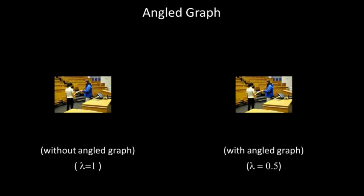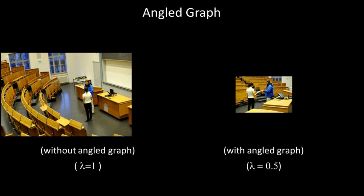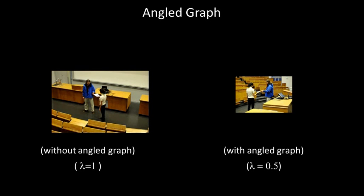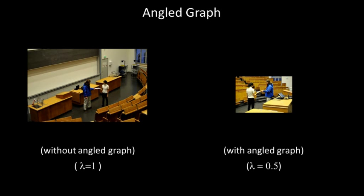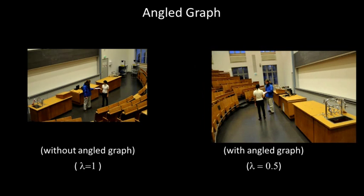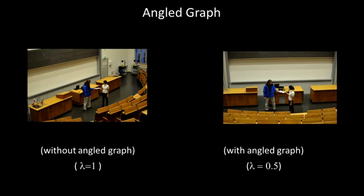The usage of the angled graph allows us to generate smooth navigations across the collected images. To prove this, we compare our approach with a naive approach where only image similarities, i.e. image distances, are considered, lambda equal to 1 in the paper. Let's play this animation first. Notice how jagged the experience is towards the end. Now, using the angled graph instead, the navigation experience is more smooth and pleasant. This dataset contains 235 images.